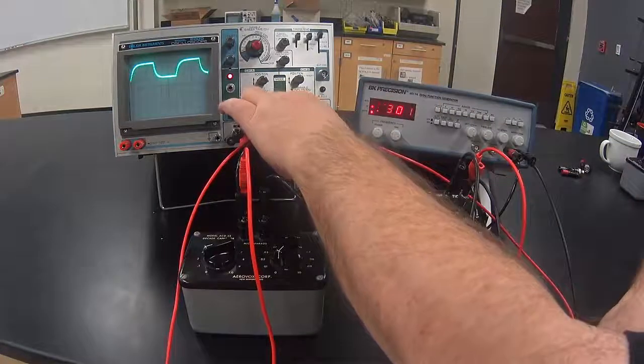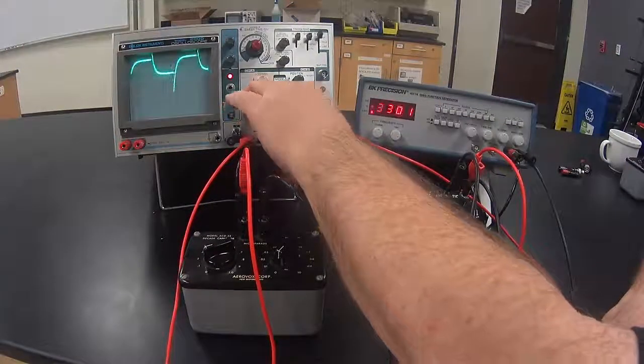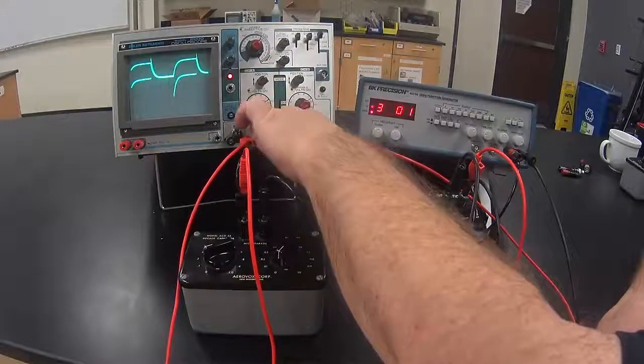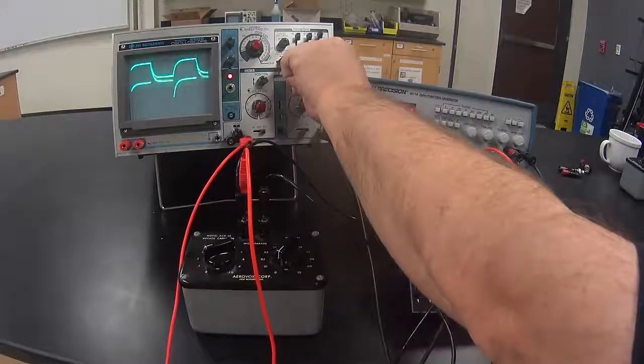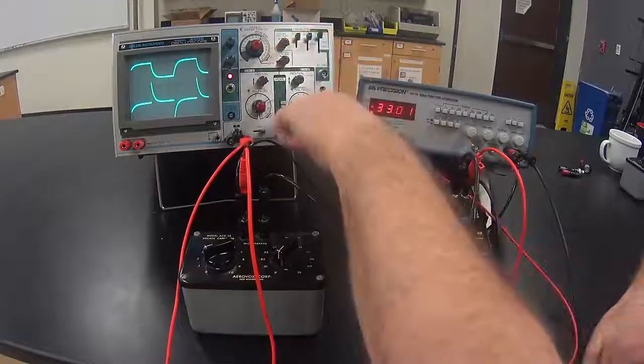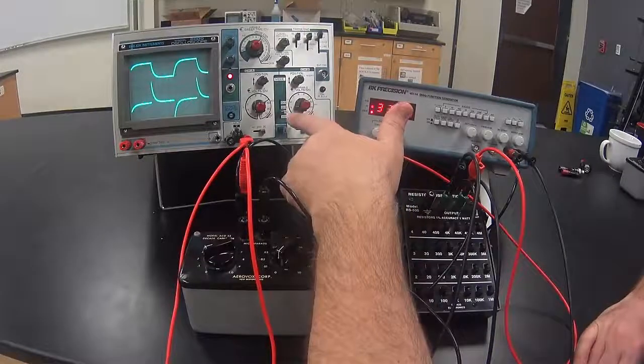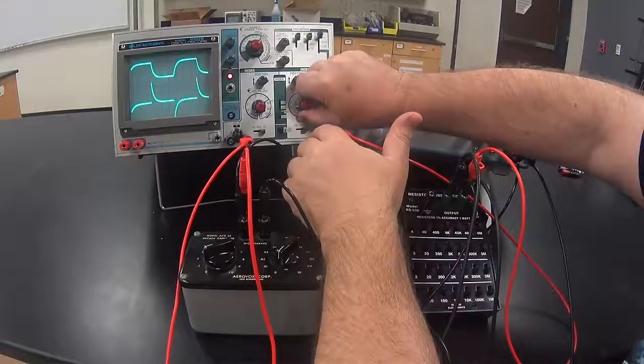Now I'm going to switch the mode to dual so we can display both channel A and channel B on the screen. Move channel B down and adjust the time per division to match the setting for channel A.